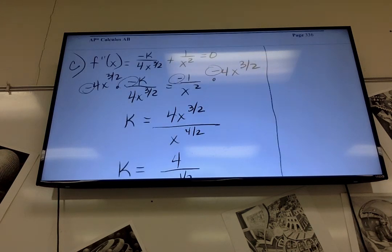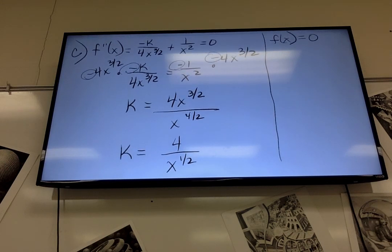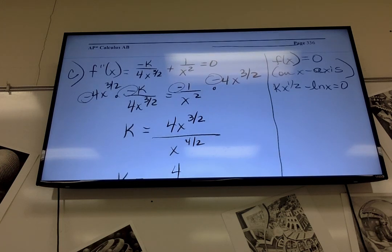Then it says that the graph of f has a point of inflection on the x-axis. So that means that f of x is on the x-axis. f of x has to be equal to 0. kx to the 1 half minus natural log of x equals 0. Now think about it. The reason why it is 0. Is it supposed to say on x-axis? On. On. If it's on the x-axis, think about it. It's x and then 0 for the y. So that's why I'm saying it has to be equal to 0. The y-coordinate. Okay.